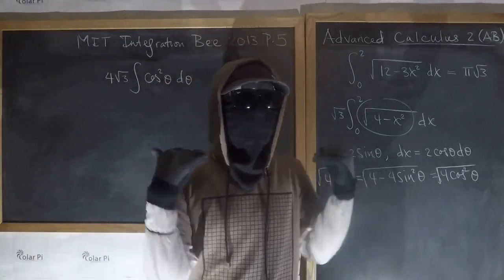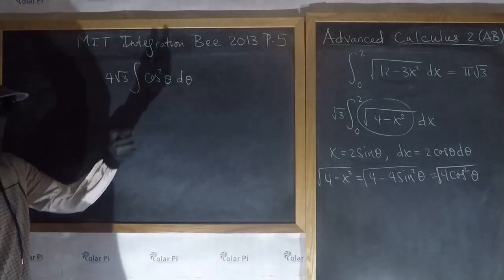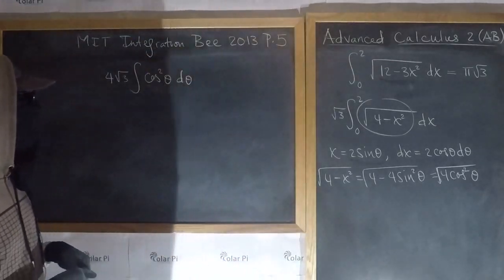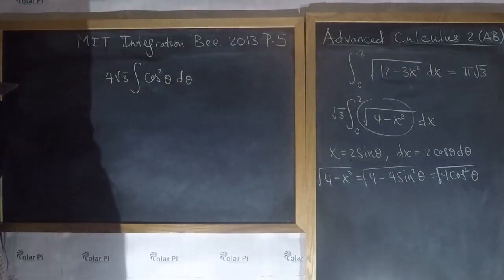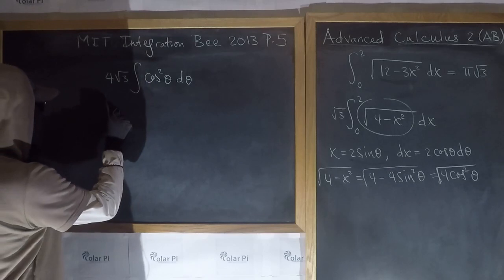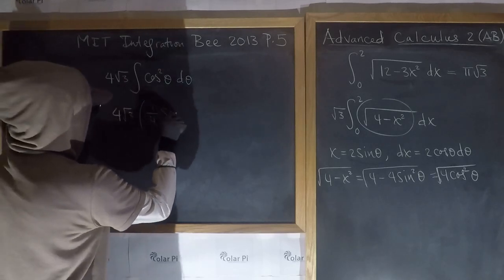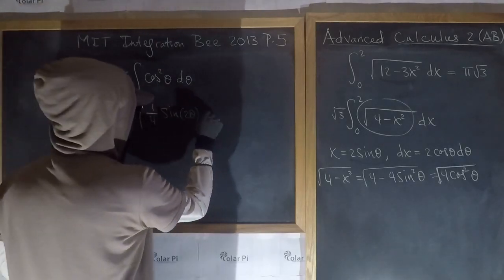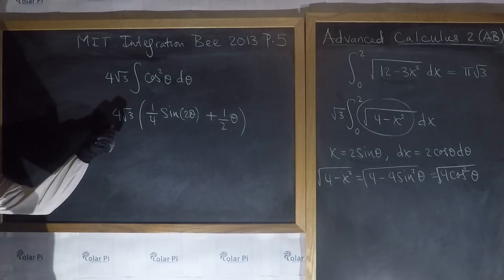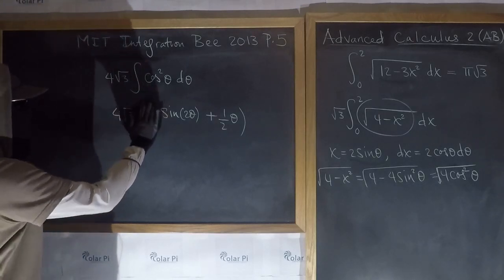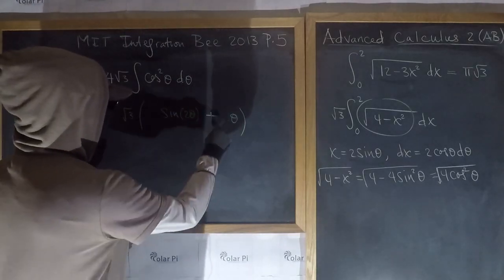I have a video series called important integrals — the integral of cosine squared is one of them. The result of integrating cosine squared theta is one-quarter sine two theta plus one-half theta. Distributing the four, the quarter cancels and the half becomes two, giving: root three times sine two theta plus two theta.